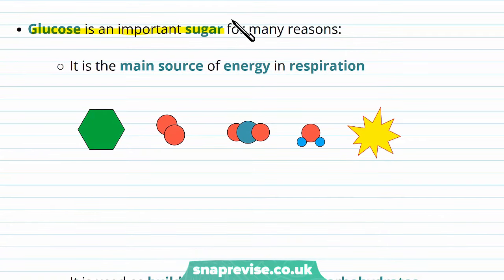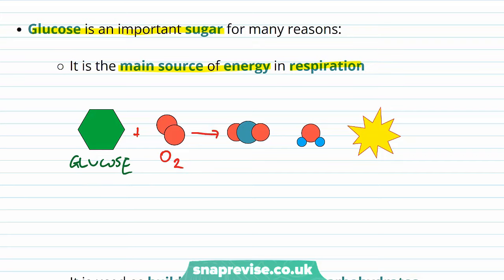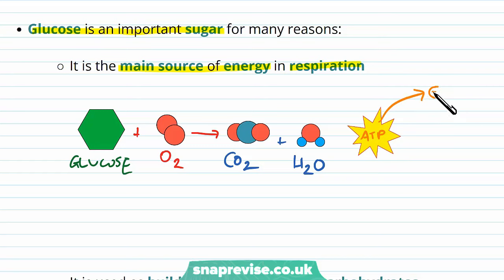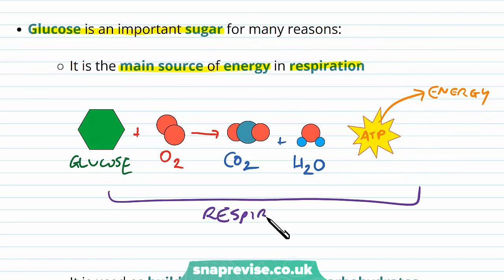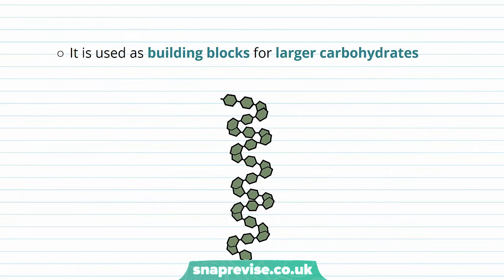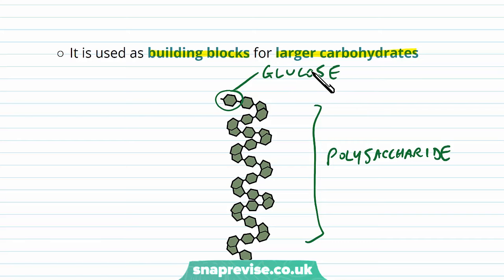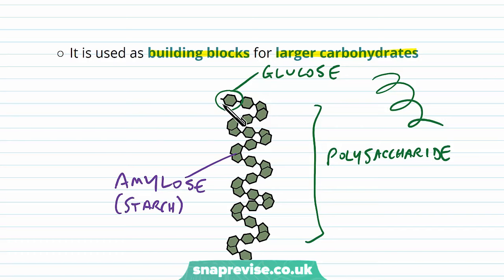Glucose is a really important sugar and pops up in many aspects of biology. It's the main source of energy in respiration for any cells. Glucose molecules combine with oxygen that we breathe in from the air, reacting to give CO₂ and water as byproducts, and importantly producing ATP — the molecule from which we get our energy. Glucose is also the building block for larger carbohydrates. In this long polysaccharide chain, the monosaccharides are glucose, and when arranged in a spiral structure this forms amylose, which is part of starch.